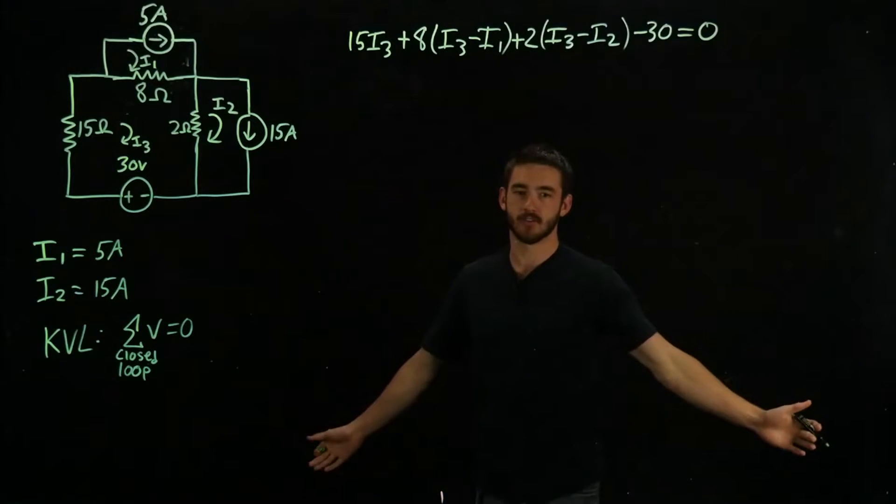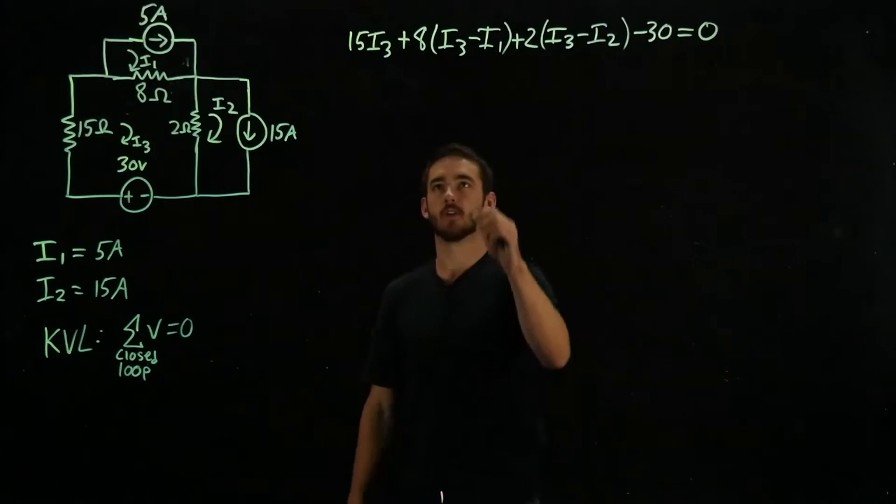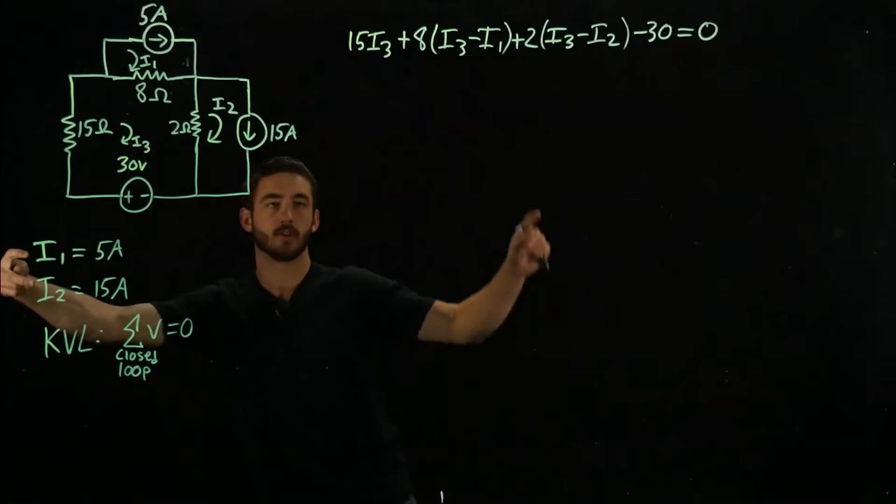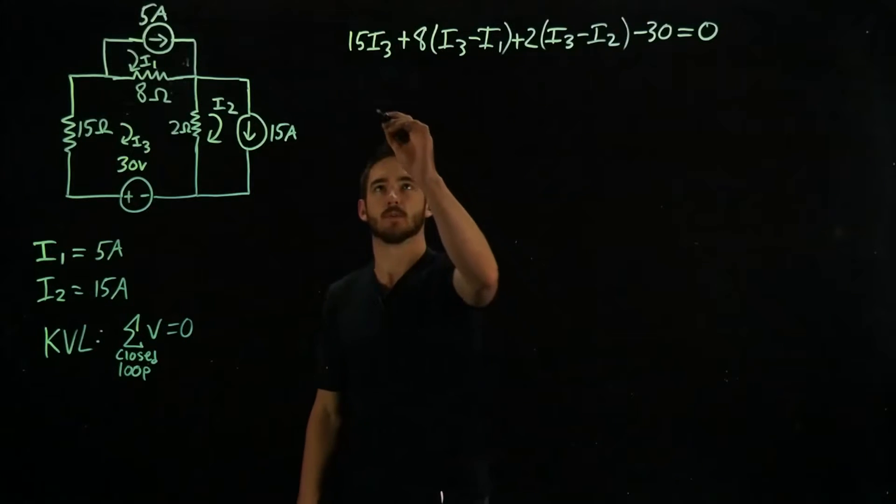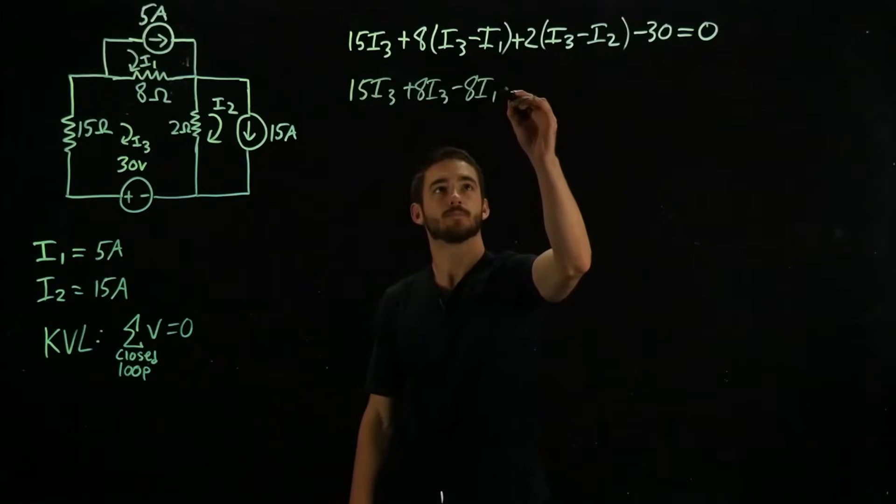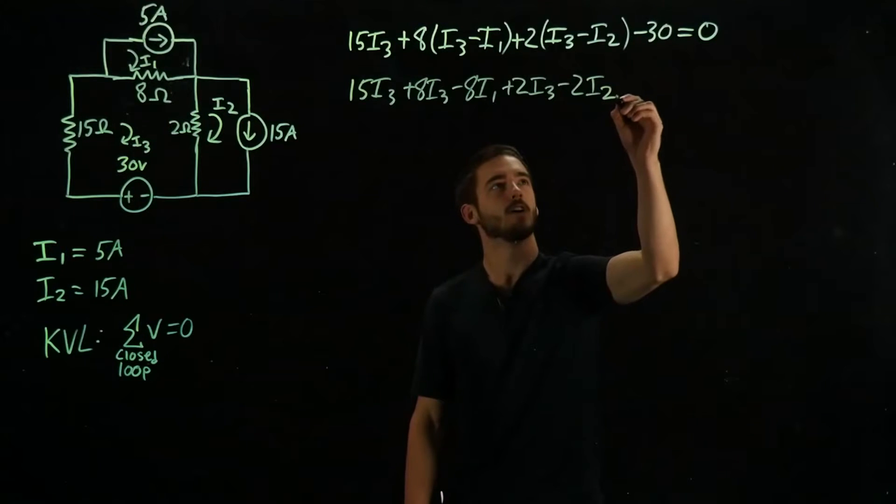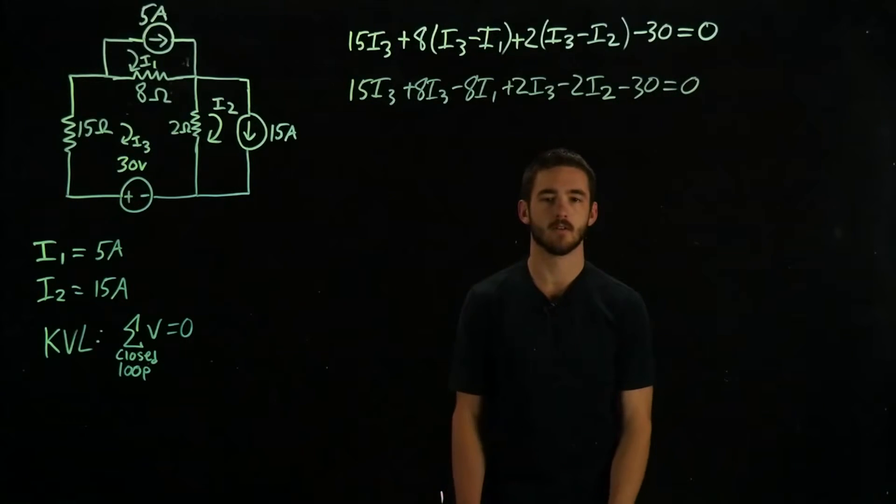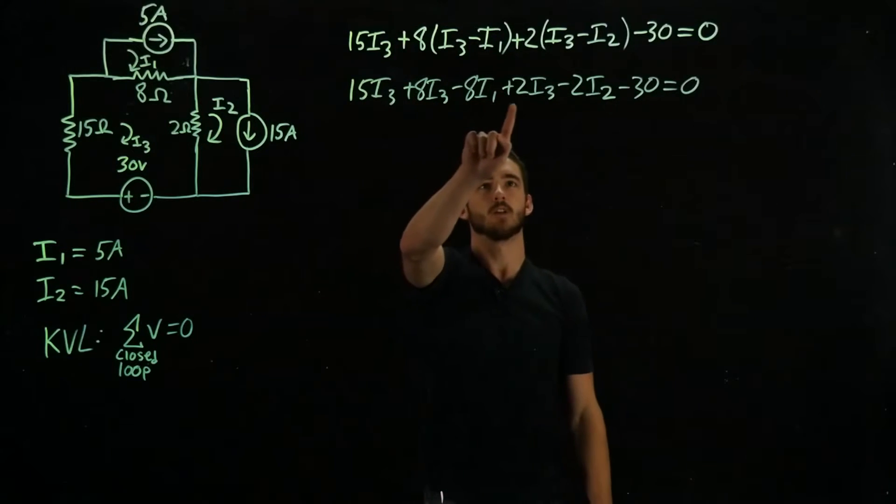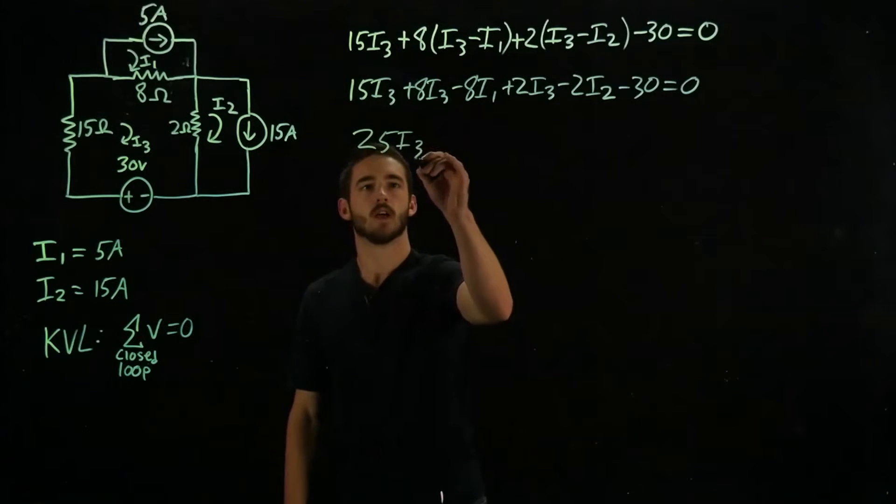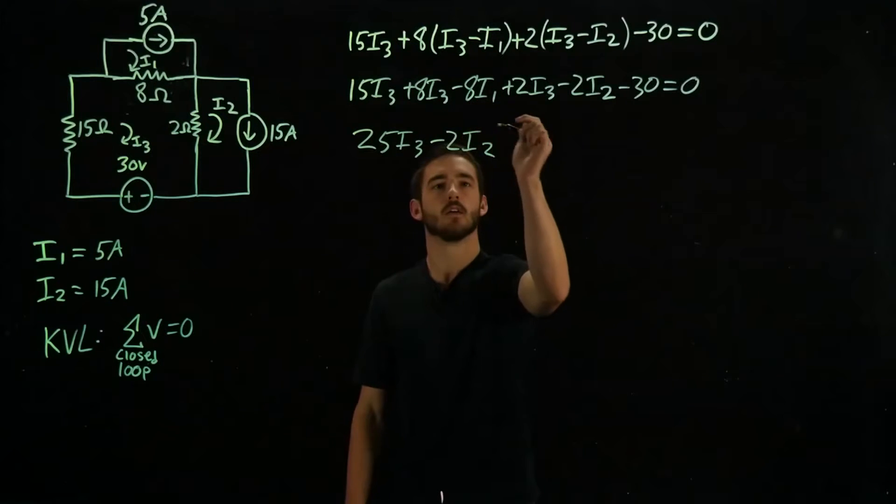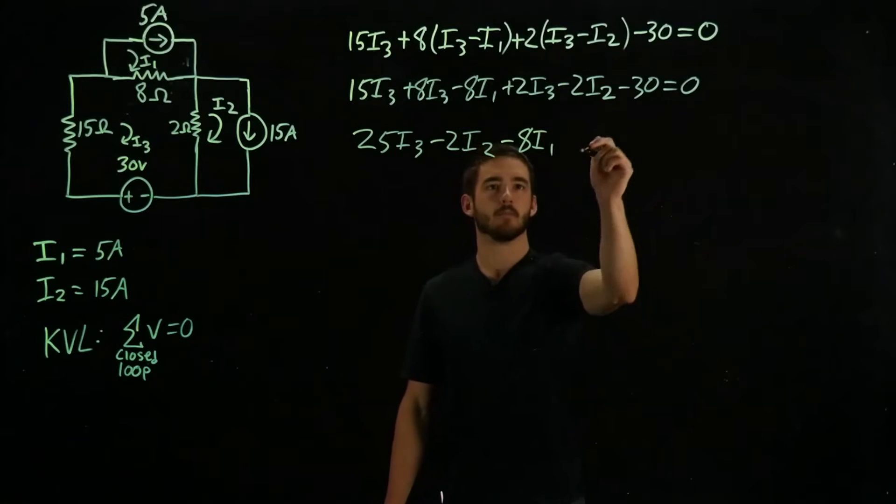So now this is just basic algebra with one variable to solve for. Because our variables are I3, I2, and I1. But these are constants right here, I1 and I2. So really all we need to solve for is this I3. So let's do some quick algebraic manipulation. Let's expand these terms. So we have 15I3 plus 8I3 minus 8I1 plus 2I3 minus 2I2 minus 30 equals 0. And now let's combine like terms. So we're going to have 15 plus 8, which is 23, plus 2, which is 25. So we're going to have 25I3. And then we only have one term with I2. So it's going to be minus 2I2. And then we have minus 8I1. And then minus 30 equals 0.